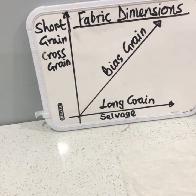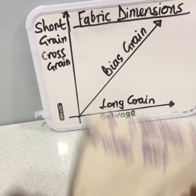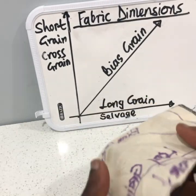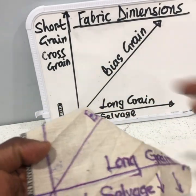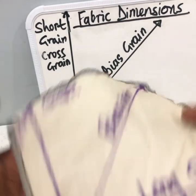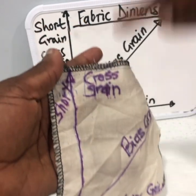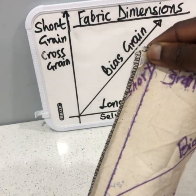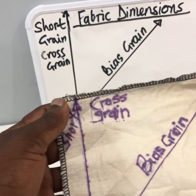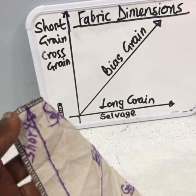The long grain part of the fabric is the part of the threads or the weave that move parallel to the selvage — they go parallel to the selvage. Those that go across or crisscrossing it will fall on the short grain part of the fabric. That would be the short grain of the fabric.